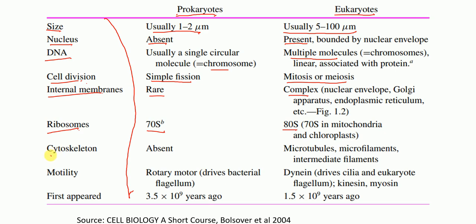In prokaryotes, cytoskeleton is absent. Whereas in eukaryotes, we have microtubules, microfilaments, intermediate filaments — that means the presence of cytoskeleton.